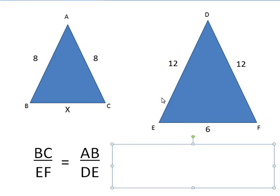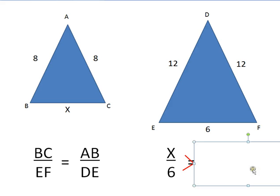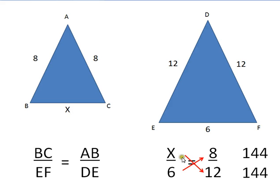Now, I can plug in some numbers. I can easily figure out that BC is X. And EF is 6. So BC over EF is X over 6. And now I'm going to look at my AB and DE. AB is 8. DE is 12.